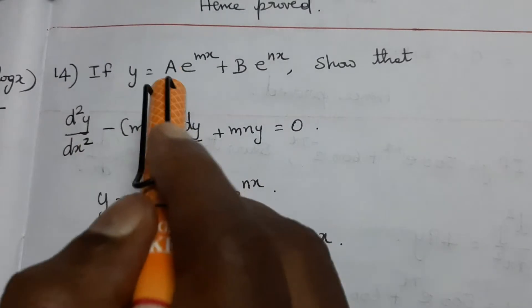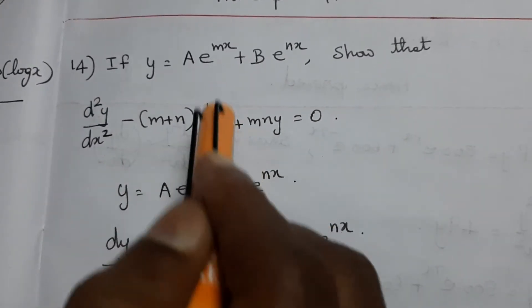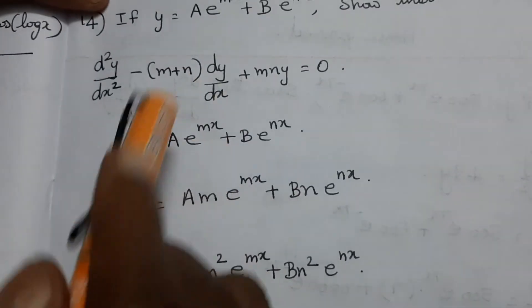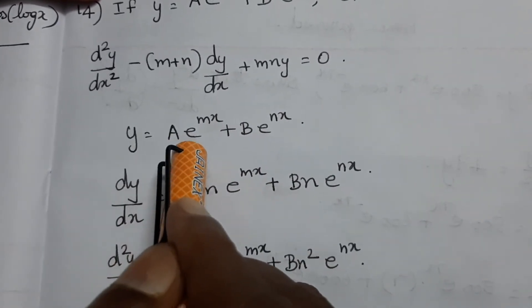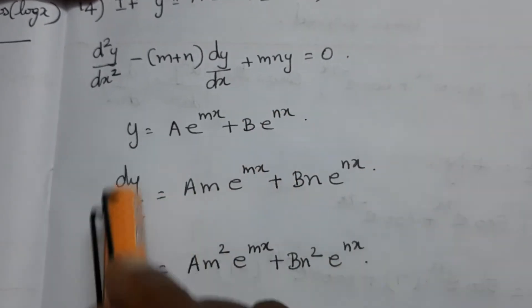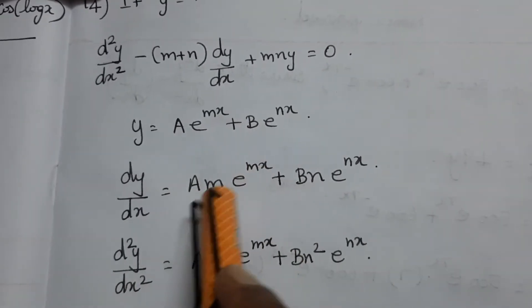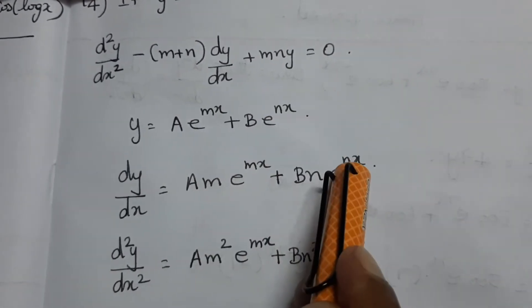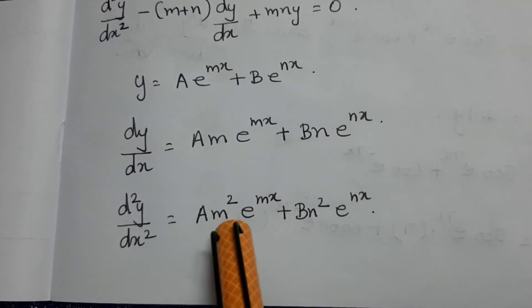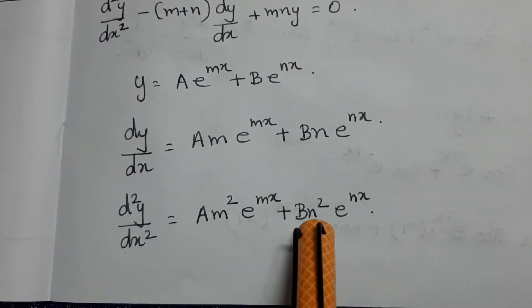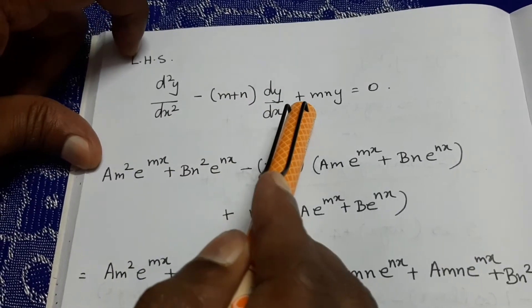Next: if y equals a·e^(mx) plus b·e^(nx), show that d²y/dx² minus (m+n)·dy/dx plus mn·y equals 0, where a and b are constants. So dy/dx equals a·m·e^(mx) plus b·n·e^(nx), and d²y/dx² equals a·m²·e^(mx) plus b·n²·e^(nx).